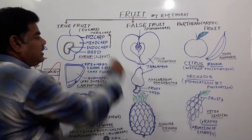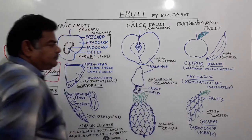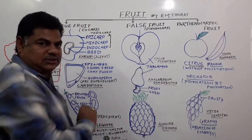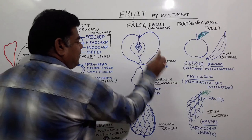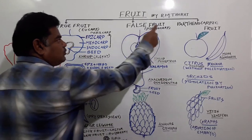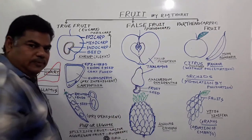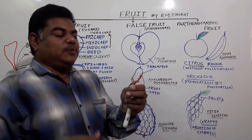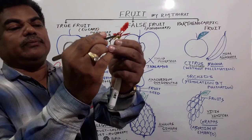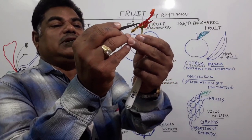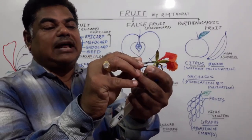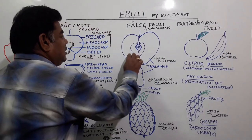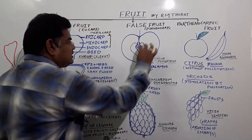In the case of Malus domestica — apple — this portion is the thalamus. We call apple a fruit, but it is a false fruit — a pseudocarpic fruit. As per the rule, fruit formation takes place from the ovary, but in the case of apple, the thalamus plays an important role in the formation of the fruit. The thalamus gets converted into a fleshy structure in the case of apple.